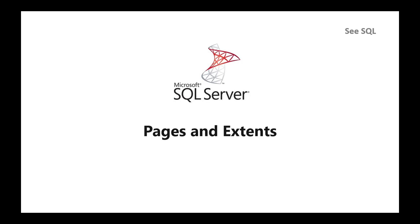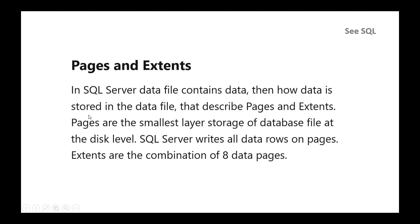Hello and welcome to the SQL Server Architecture video series. In the previous video we discussed about the physical files in SQL Server. In this video we are discussing about how data is arranged in the physical file, that is pages and extents. In SQL Server data files contain data — pages are the smallest layer of storage and extents are the combination of eight data pages.